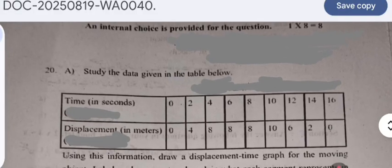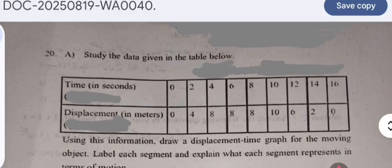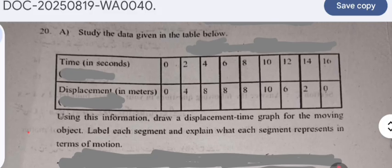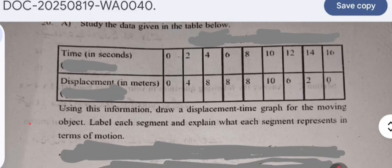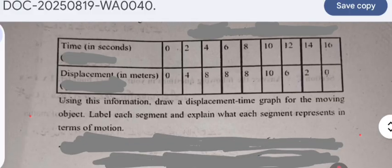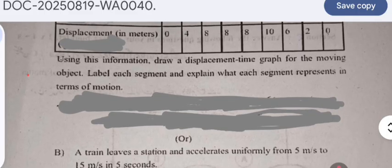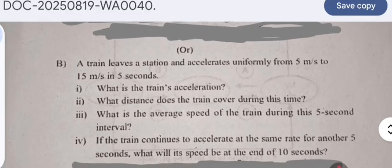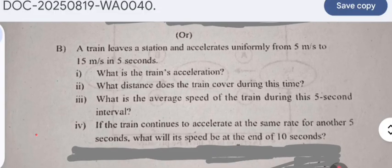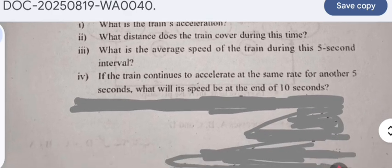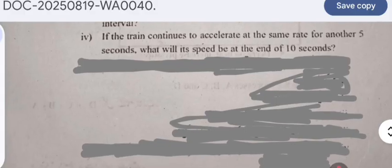In Section C, there is an internal choice. Question 20A or 20B, each worth 8 marks. Question 20A: Study the data given in the table below showing time in seconds and displacement in meters. Using this information, draw a displacement-time graph for the moving object. Label each segment and explain what each segment represents in terms of motion. Question 20B: A train leaves a station and accelerates uniformly from 5 meters per second to 15 meters per second in 5 seconds. What is the train's acceleration? What distance does the train cover during this time? What is the average speed of the train during the 5 second interval? If the train continues to accelerate at the same rate for another 5 seconds, what will be its speed at the end of 10 seconds?